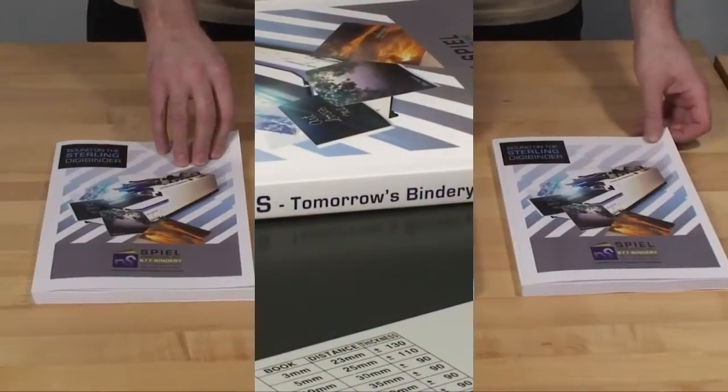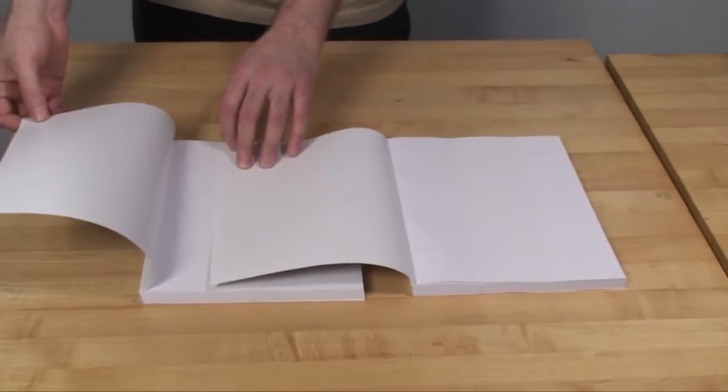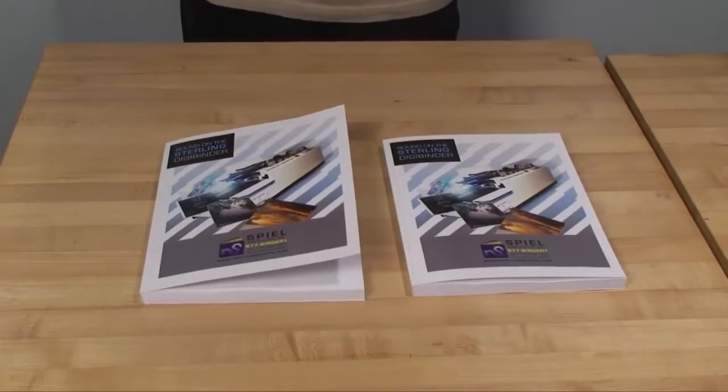Here are the results. As you can see, the DigiBinder can bind books with side gluing without creasing.